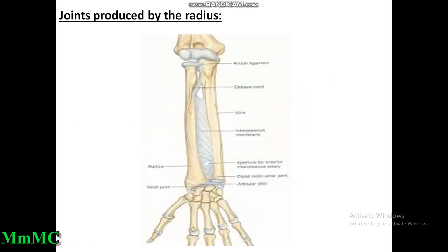Joints produced by the radius: the upper end of the radius articulates with the capitulum of the humerus, and the ulna articulates with the trochlea of the humerus, forming the elbow joint. The upper ends of the radius and ulna articulate with each other to form the superior radio-ulnar joint. The lower ends of the radius and ulna articulate to form the inferior radio-ulnar joint. The lower end of the radius articulates with the scaphoid and lunate bones to form the wrist joint.